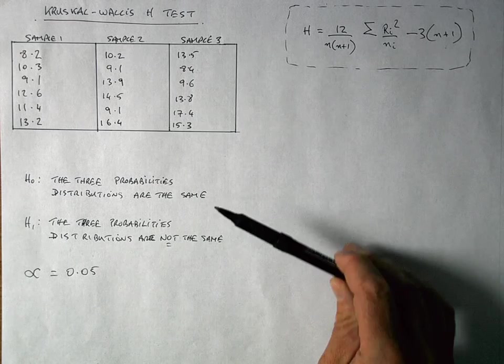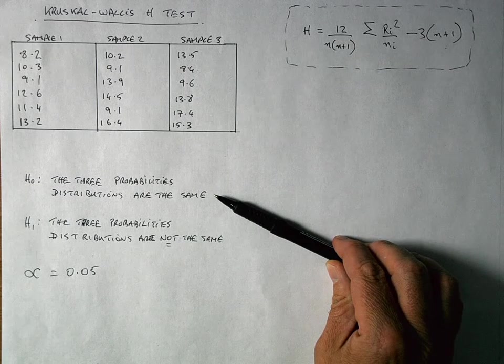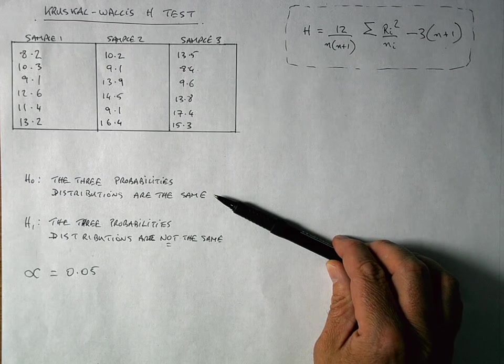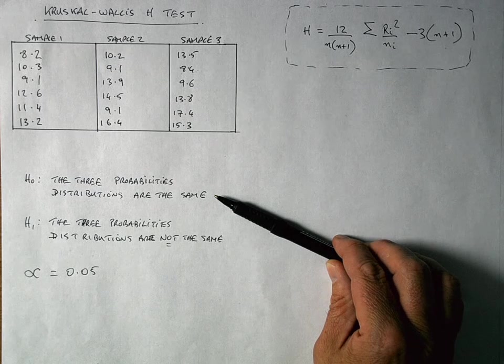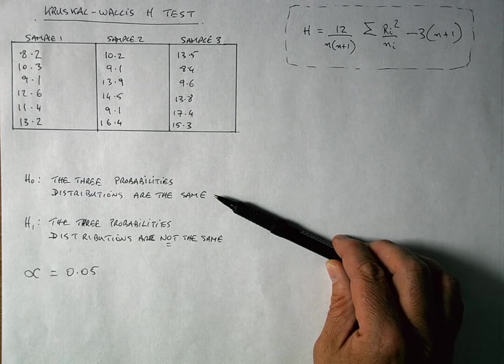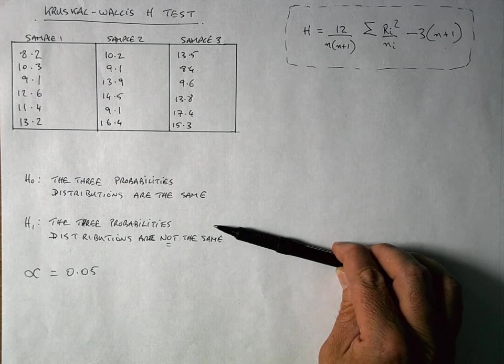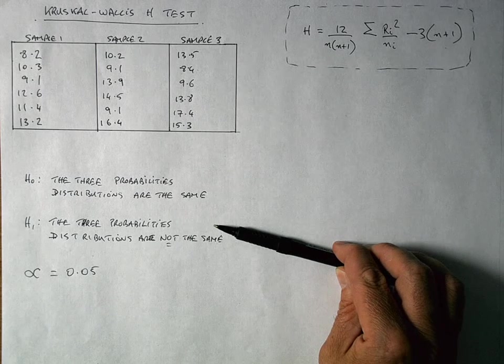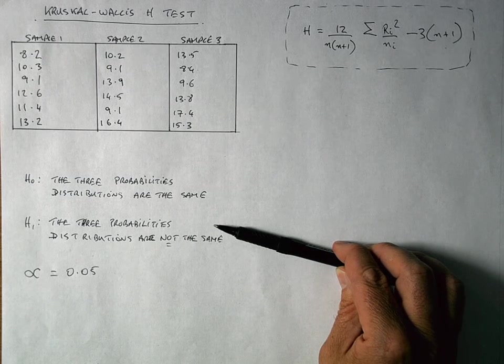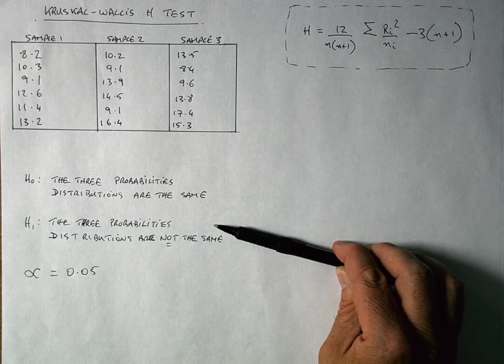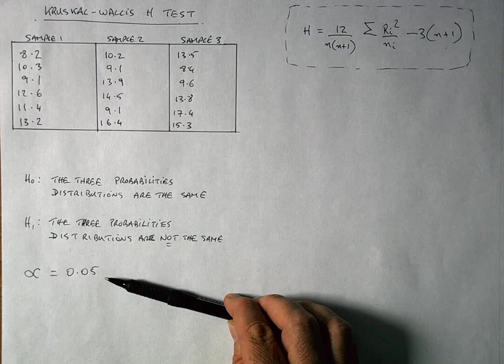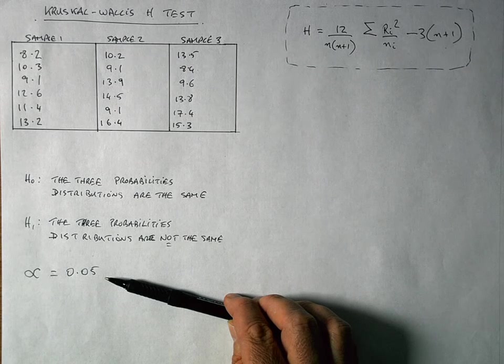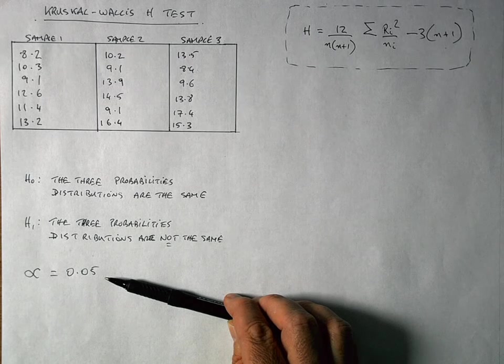And as it's a stats test, we need to, as always, set out our null and alternate hypothesis. Our null hypothesis in this case here is that the three probabilities distributions are the same. In other words, there's no difference between sample 1, sample 2 and sample 3. And our alternative research hypothesis is that these three probability distributions are not the same. In other words, at least two of them differ. And in this experiment here, our calculations, we're going to use a significance level at an alpha value of 0.05.